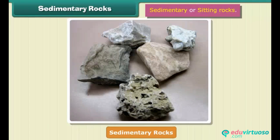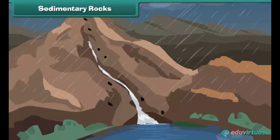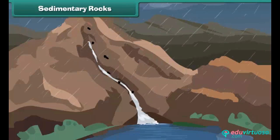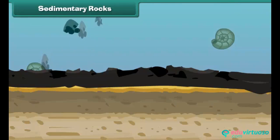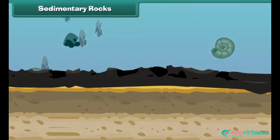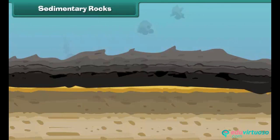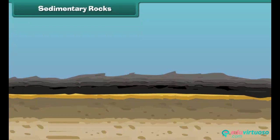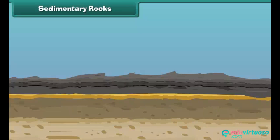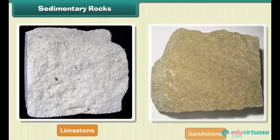The second type of rock is sedimentary rock. These are also called sitting rocks. Rocks roll down, crack, and hit each other, then are broken down into small particles called sediments. The sediments are transported and deposited by wind, water, etc. These loose sediments are compressed and hardened to form layers of rocks called sedimentary rocks. Limestone and sandstone are examples of sedimentary rock.